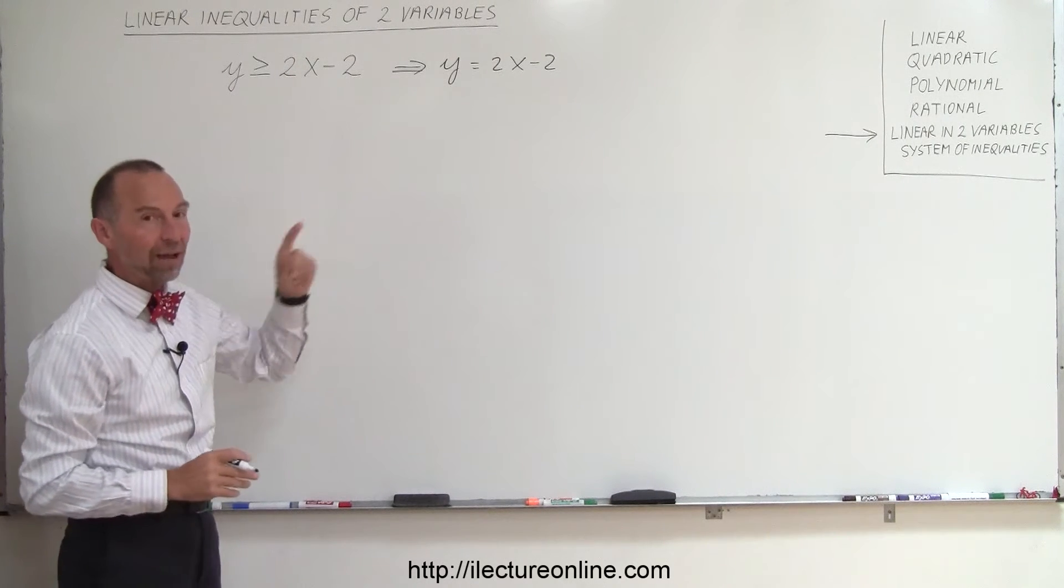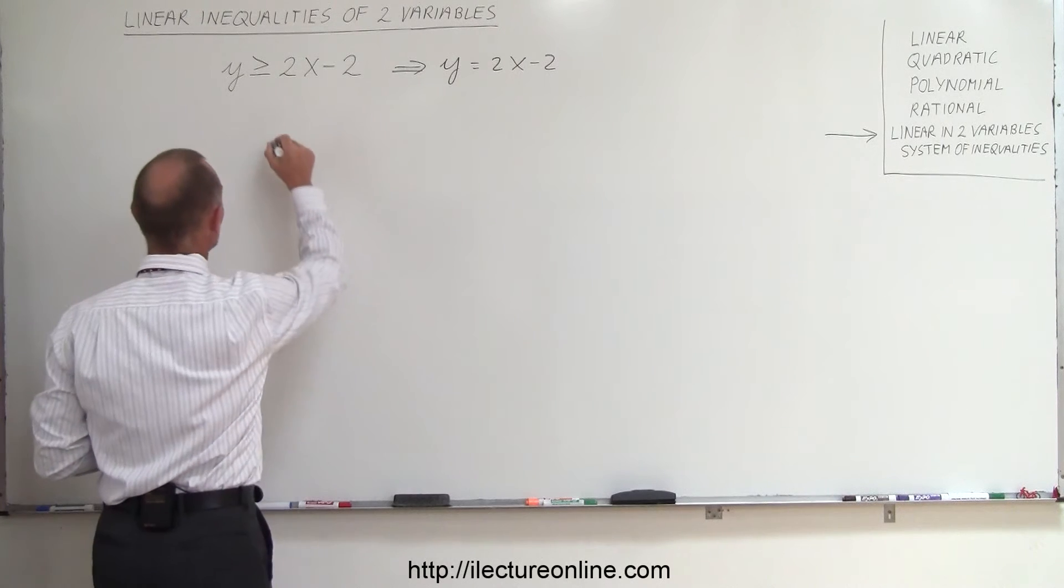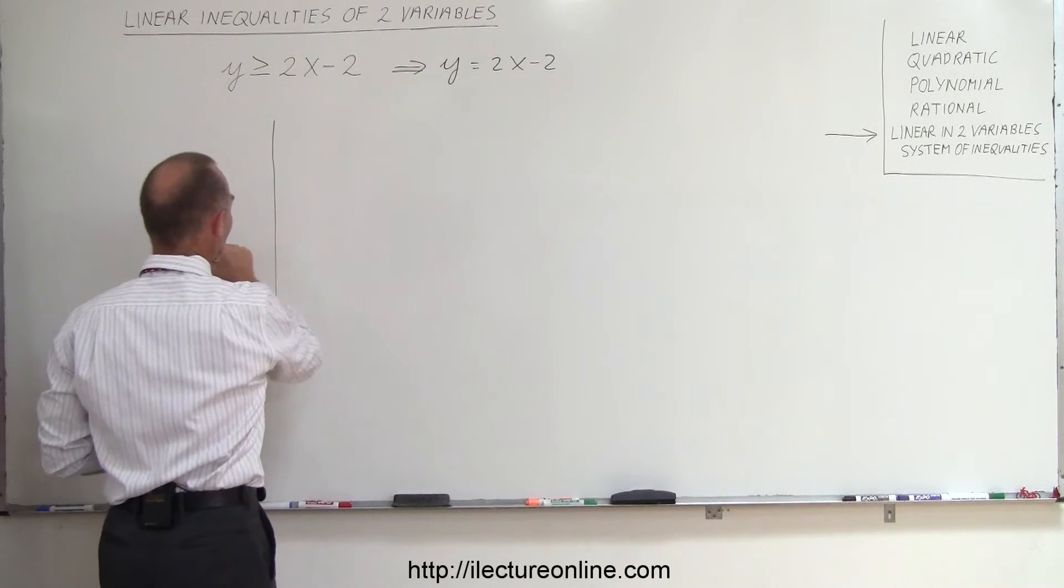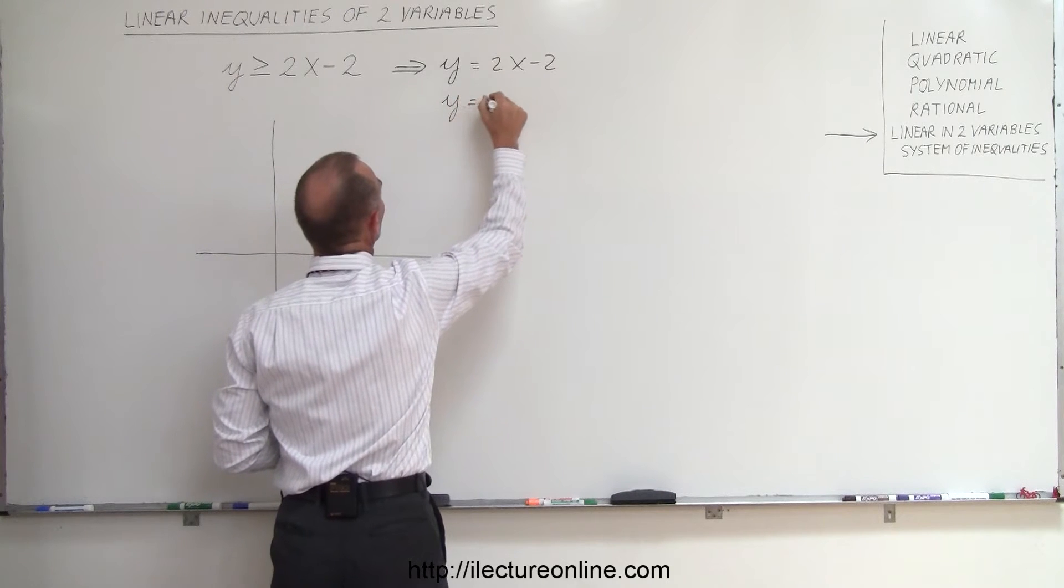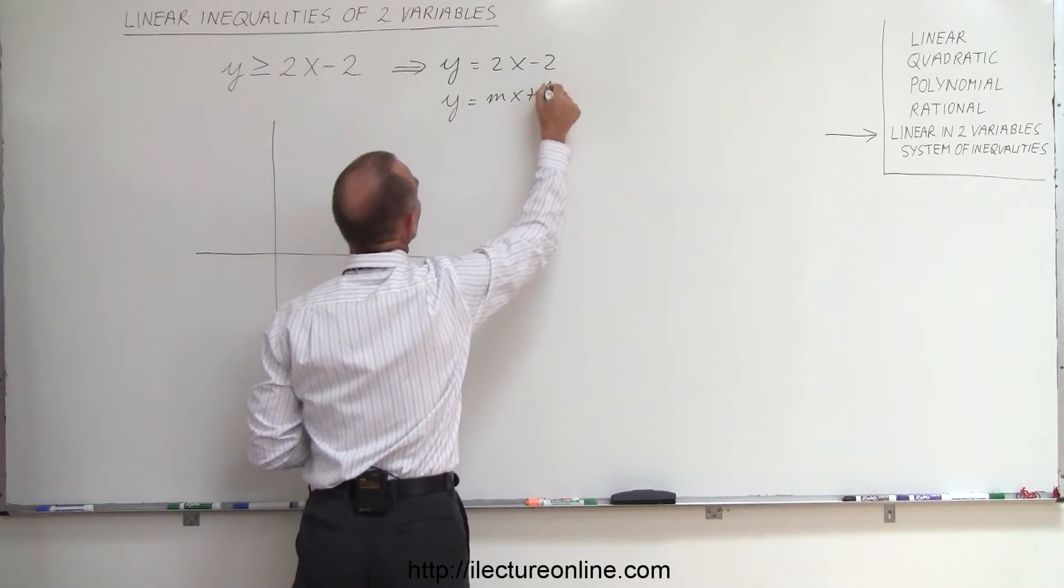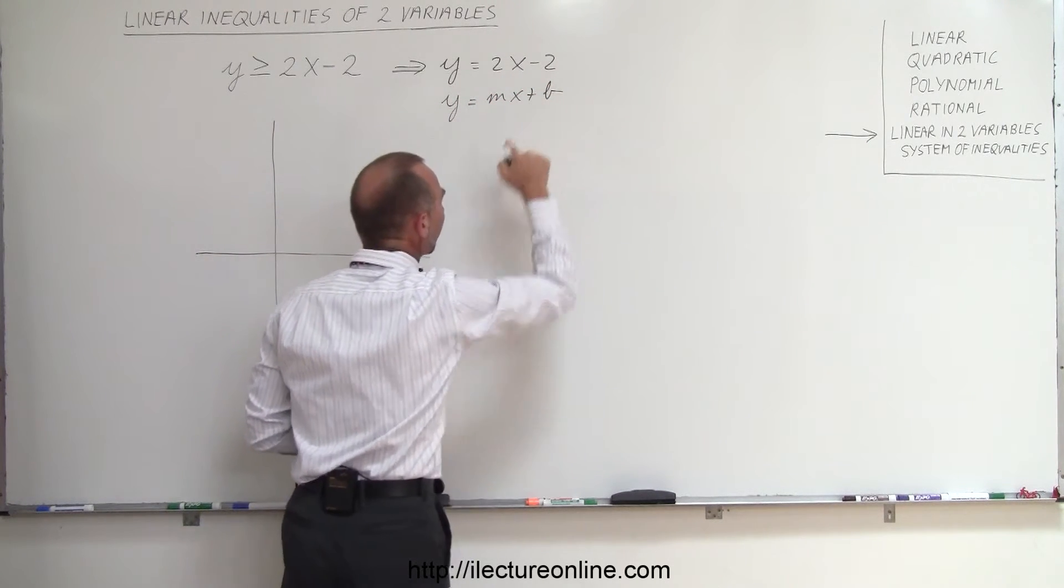So now we're going to go ahead and graph that equation. So we know how to do that, because we have the general format, y equals mx plus b. So that's the slope, and that's the y-intercept.